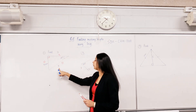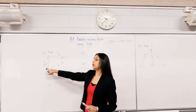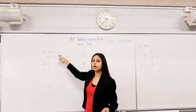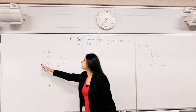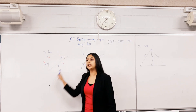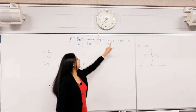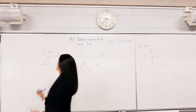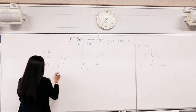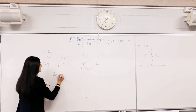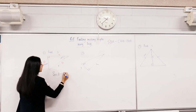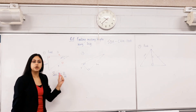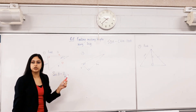We have to find y, and opposite has been given to us. Do we need adjacent? No. So we need O and H. Which ratio has O and H? We write: sine theta equals O over H. So we've labeled and chosen the correct ratio.